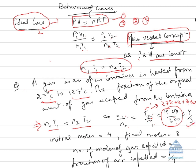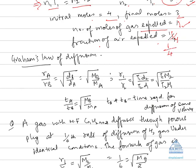Now by this we can find out that initial moles are 4 and the final moles are 3. So number of gas will be 1 because by subtracting these two we can calculate the number of moles gas expelled. Now the fraction of air expelled comes out to be 1 by 4. 1 by 4 why? Because 1 is the gas expelled and 4 is the total amount of gas.